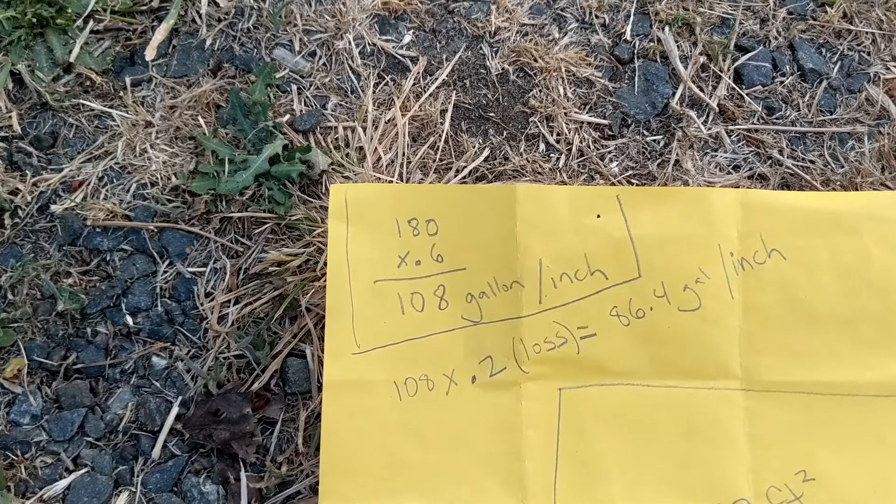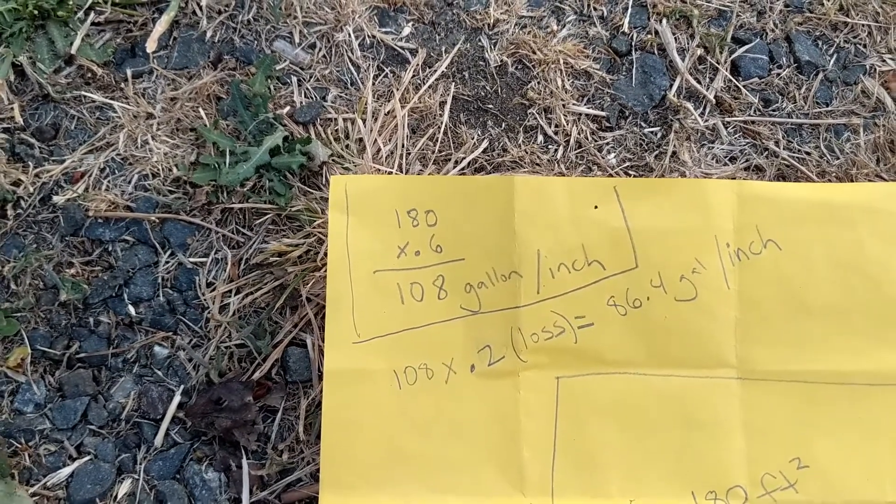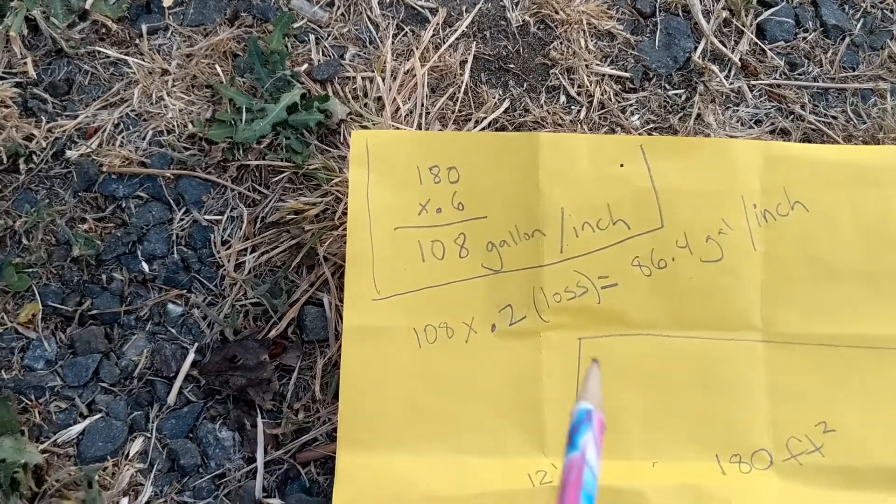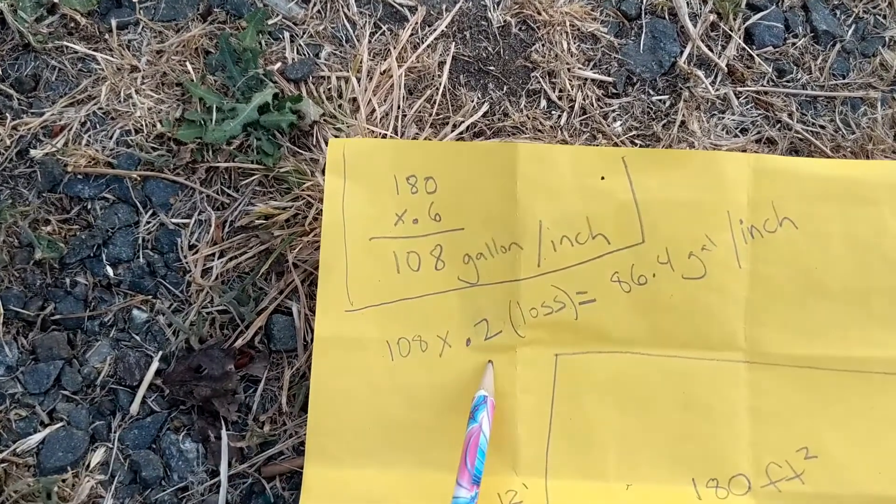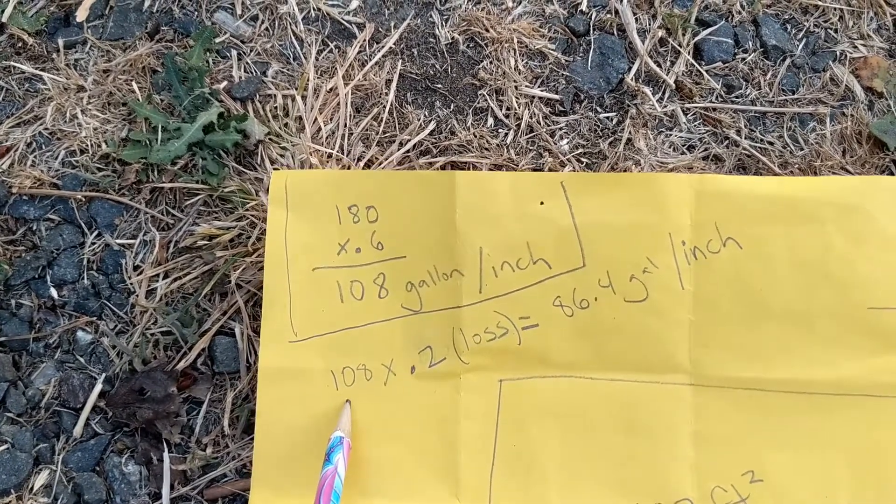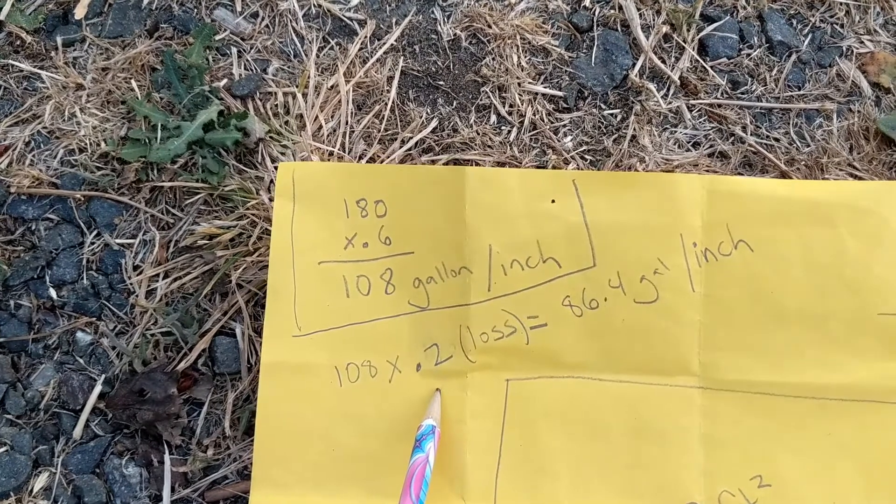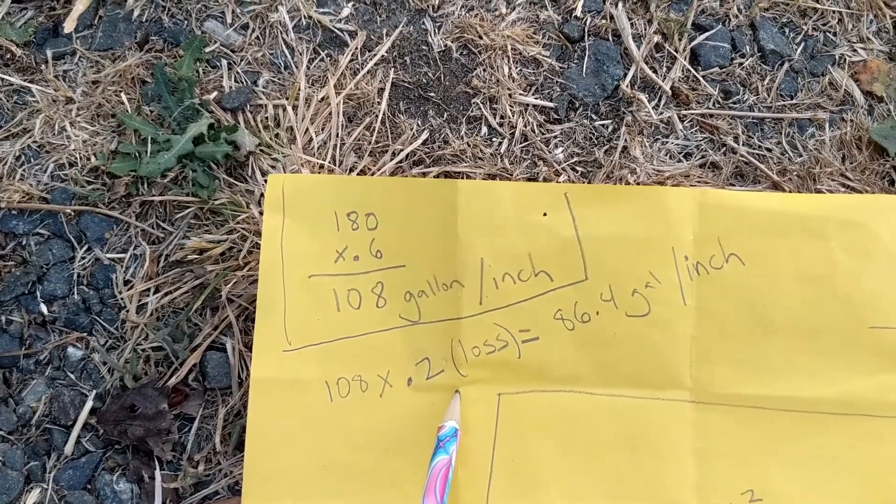Excepto que en realidad, en la realidad no estamos recolectando cada gota de agua que cae del cielo. So we assume we're going to lose about 20%. Y por eso vamos a asumir que estamos perdiendo 20%. So then we multiply 108 gallons times 0.2. Entonces multiplicamos 108 por 0.2. That's what we lose. Esto es lo que perdemos.